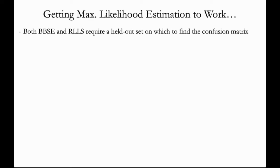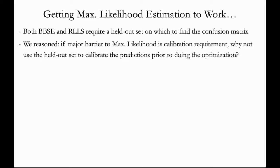One thing we noted was that both BBSE and RLLS require a held-out set on which to compute the confusion matrix. This is no accident because if you were to compute a confusion matrix using the training data, you would end up being similarly miscalibrated due to overfitting. So we reasoned that if the major barrier to applying maximum likelihood is the calibration requirement, why don't we simply use this held-out data to calibrate the predictions prior to doing the optimization?